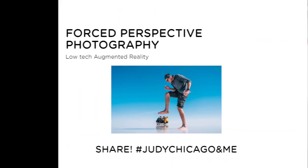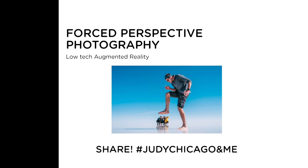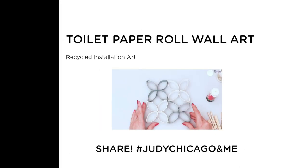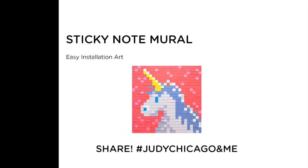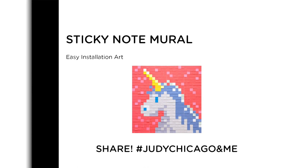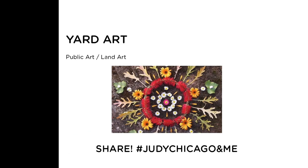Here are some additional art activities you can do at home. Try forced perspective photography by using distance between your subject to create a unique image. Use recycled materials for your own art installation, like this toilet paper roll mural. Use sticky notes on your wall to create art. Use natural elements to create yard art.